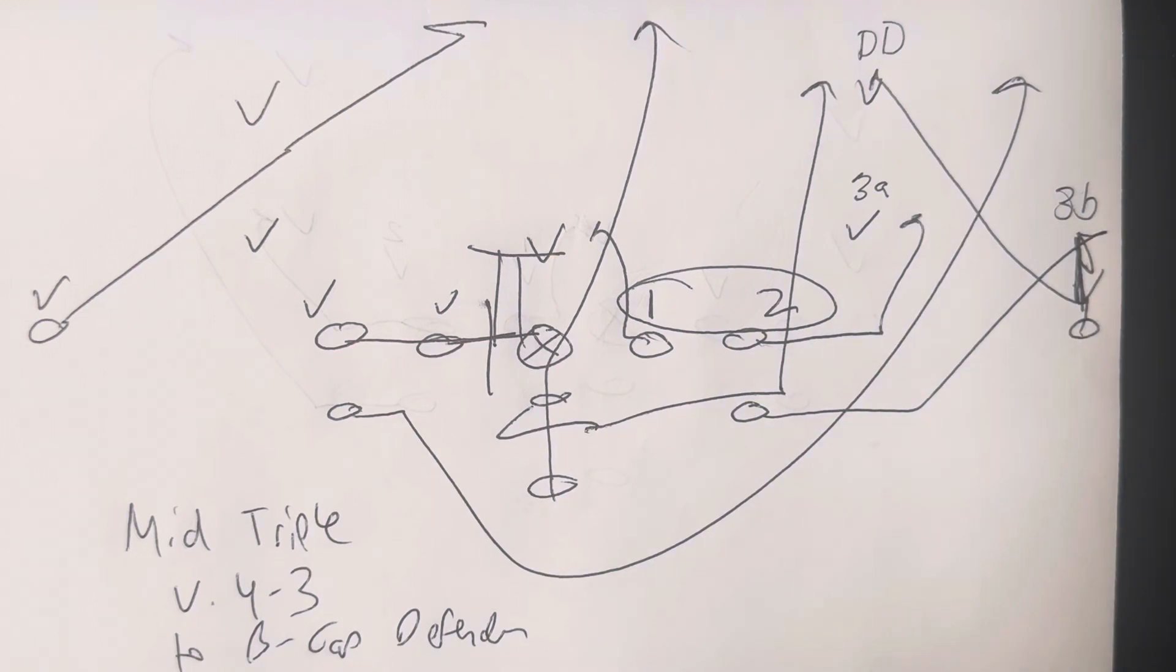In this video we're going to discuss how inside veer works better against a 4-3 defense to the B-gap defender side than midline triple option. If you watch the 2,800+ videos I have on this YouTube channel, the videos over the last couple years sound like I'm more in favor of running midline triple option because that's what Air Force runs.